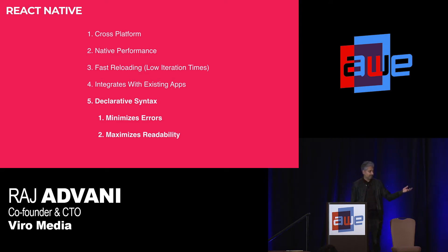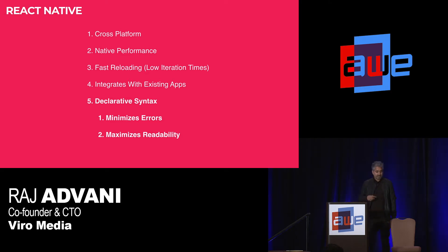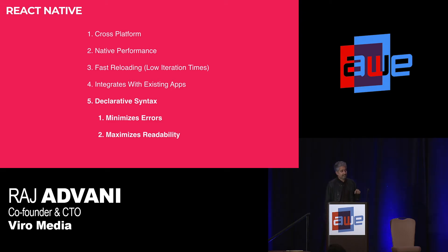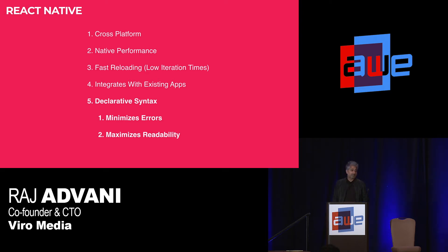The third benefit is fast reloading — you can hot-swap your JavaScript files without having to recompile, which helps a lot in AR and VR where you have big 3D models and assets. Compiling and injecting all those binaries onto your devices takes quite a bit of time. It's very useful to just hold up your phone, type in a few things, and see the changes immediately. Fourth, React integrates easily with your existing applications — you can bolt on AR features onto your existing mobile app without launching an entirely new app. And finally, React Native has a declarative syntax that eliminates whole classes of bugs and becomes quite a bit more readable.